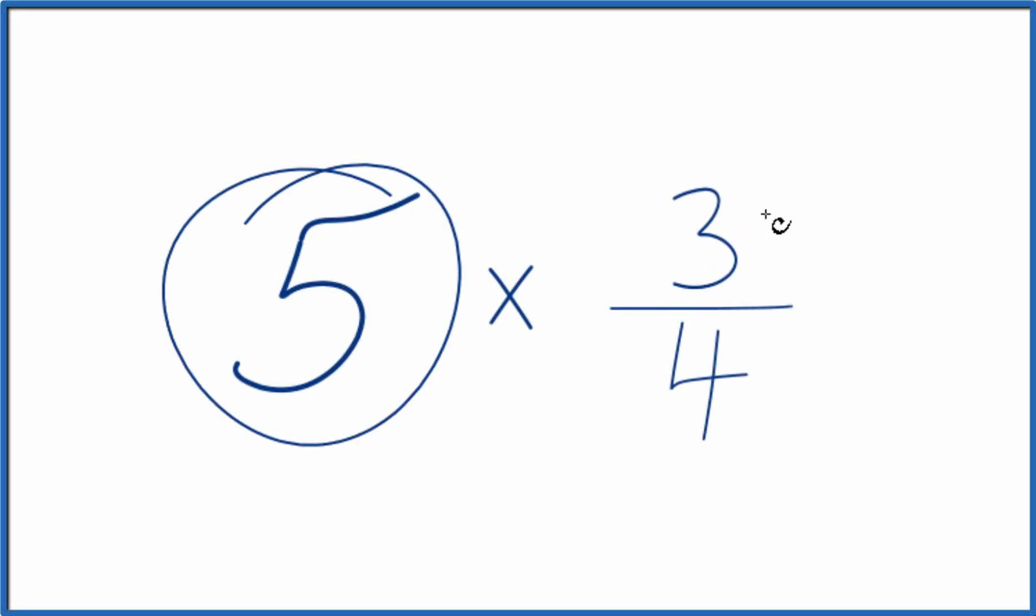Let's multiply 5 times 3 fourths, and here's how you do it. You could just add 3 fourths together 5 times. That's 5 times 3 fourths.